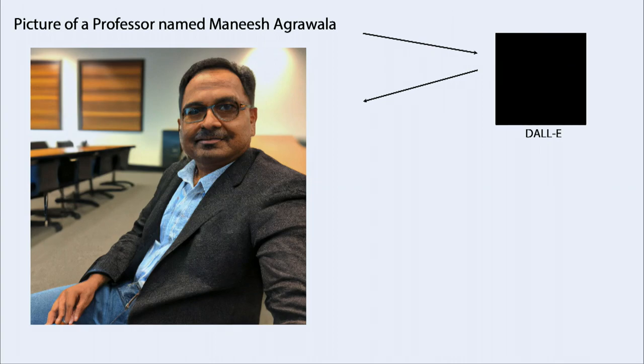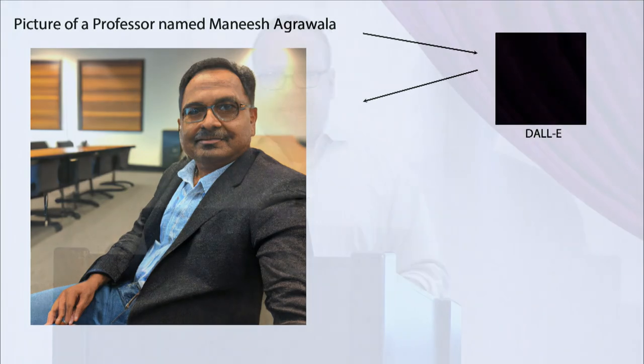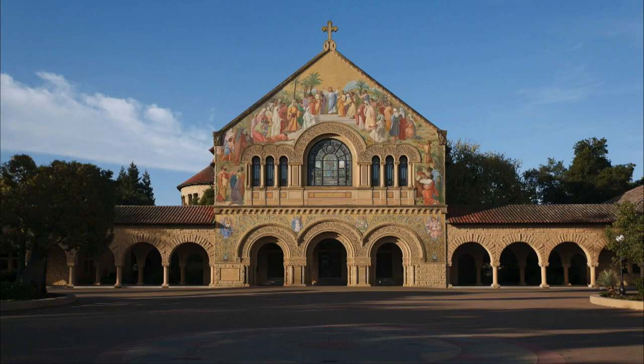Overall this is an amazing capability — humans have never before had the ability to take a sequence of words and turn it into an image. Now I want to do something else: construct an image of Stanford's Memorial Church and main quad, but in Blade Runner style — nighttime, rain, neon signage, food stalls, people.